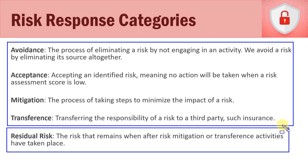There are four risk response categories. The first is avoidance — eliminating a risk by not engaging in a particular business or IT activity. For example, if there's a risk that our public web server could be hacked, we could avoid that risk entirely by choosing not to have a web server or web presence. No web server means no risk of it being hacked.